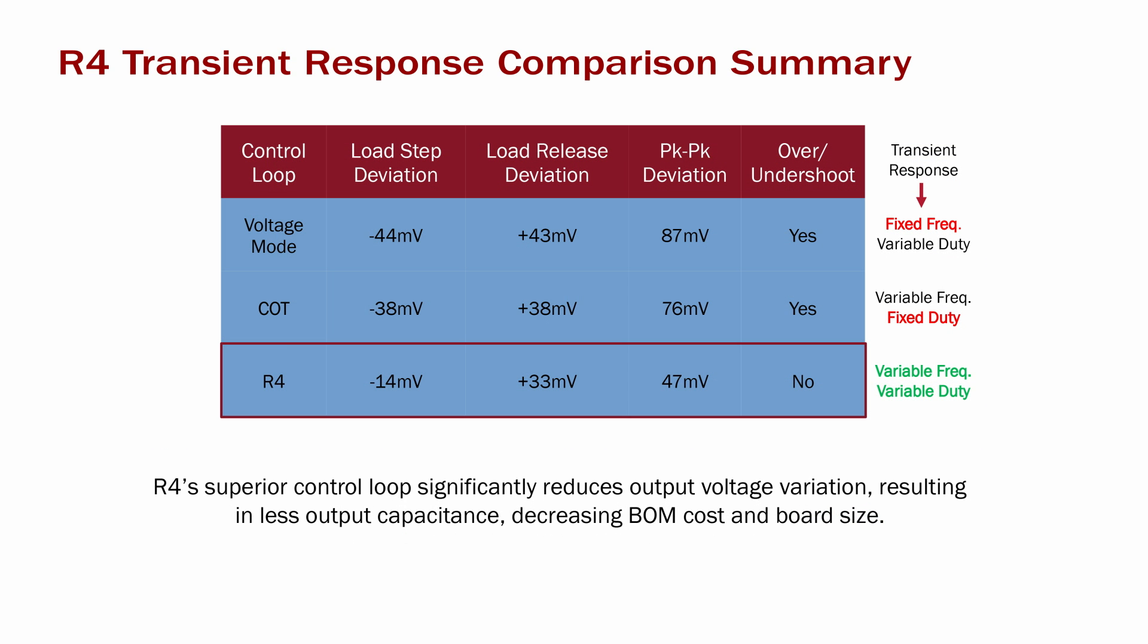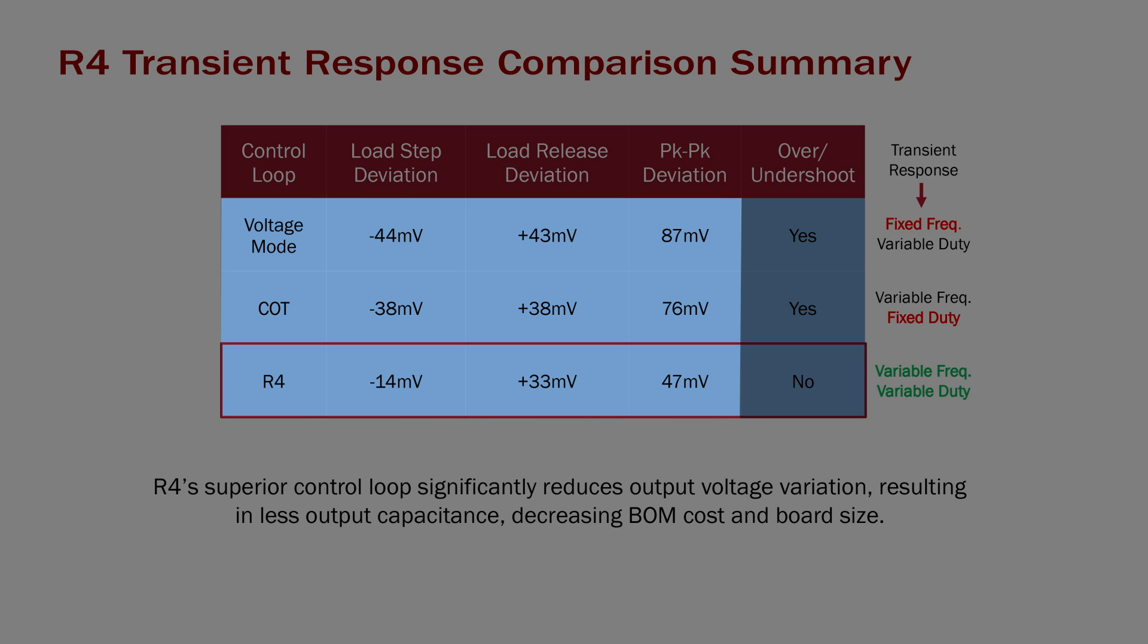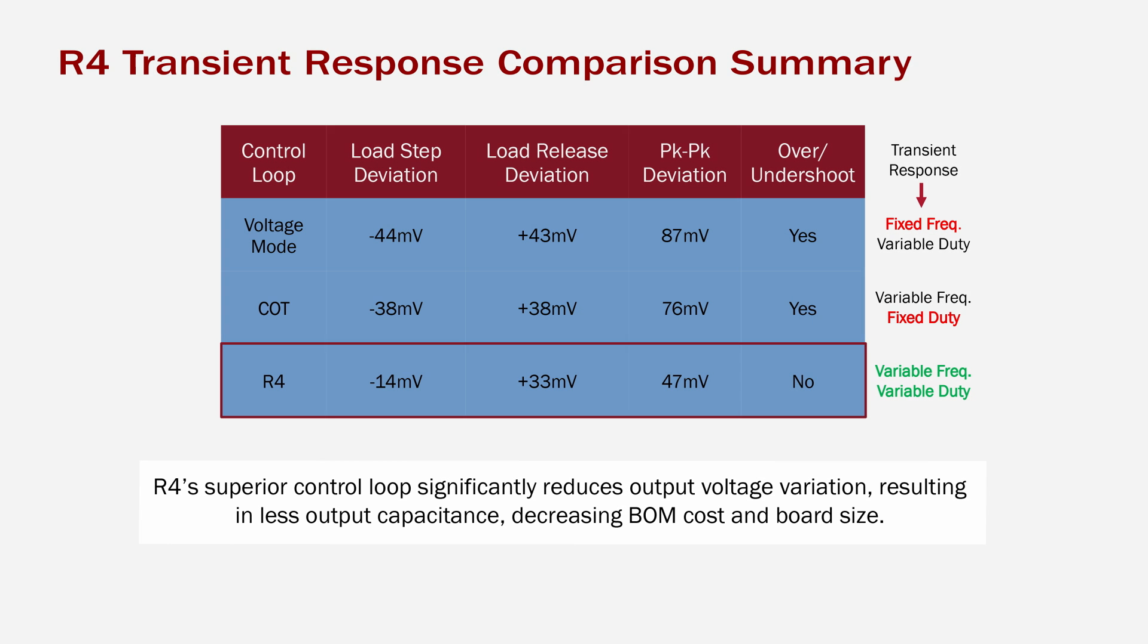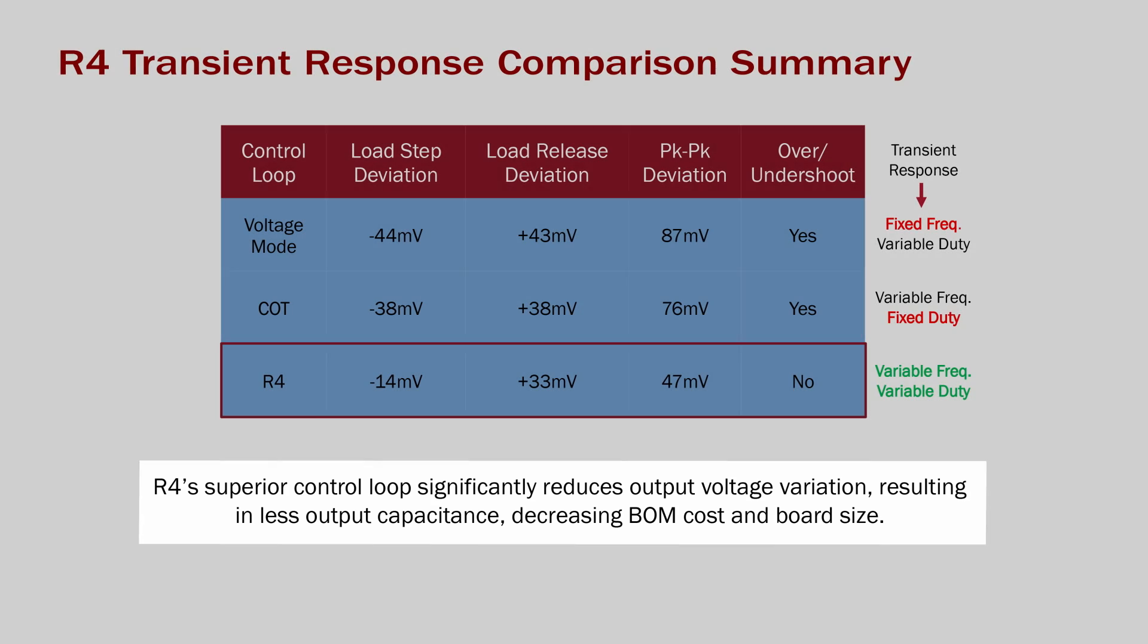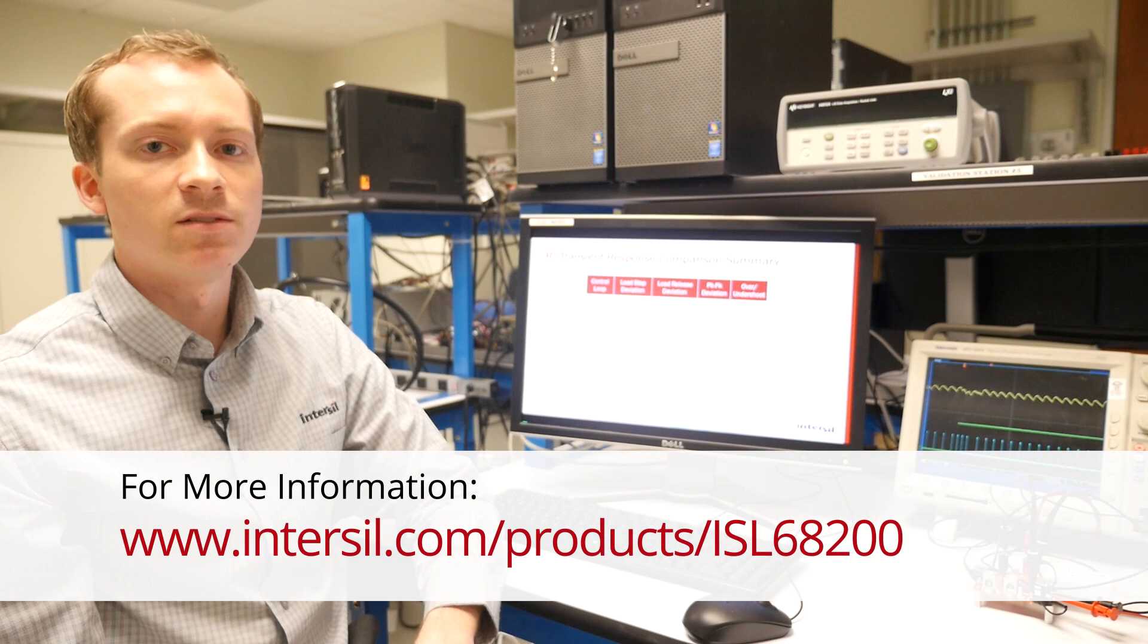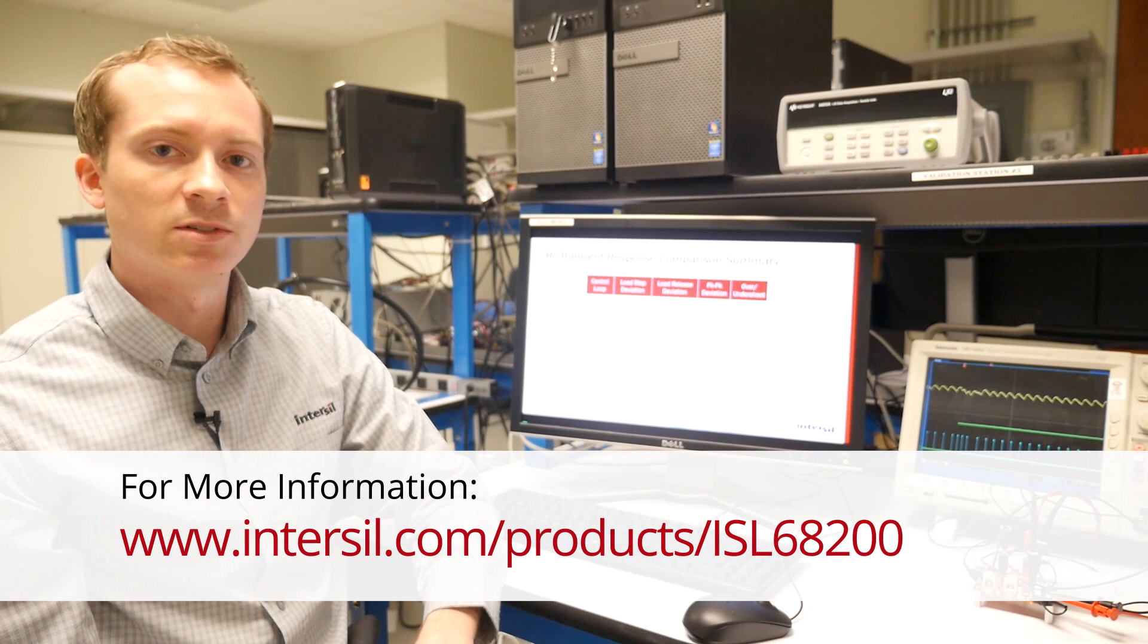In summary, the R4 control loop, because it's based on a variable frequency, variable duty cycle architecture, has one half the peak to peak deviation with comparable conditions as a voltage mode controller and a constant on-time controller. This superior transient performance allows you to do a design with fewer output capacitors, which saves both board space and BOM cost. For more information, visit www.intersil.com.